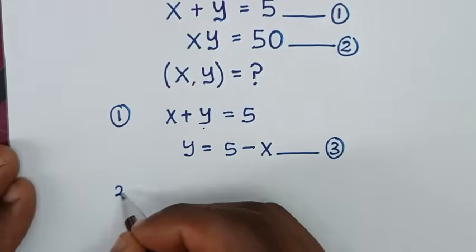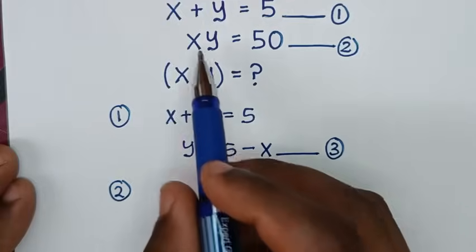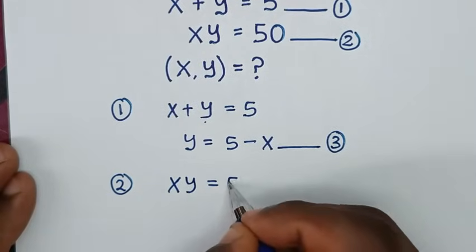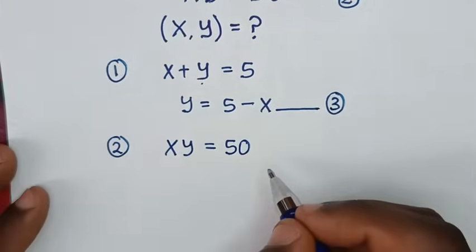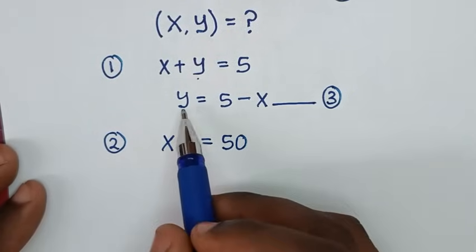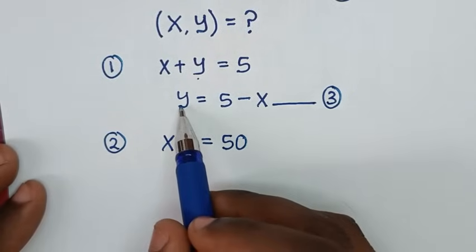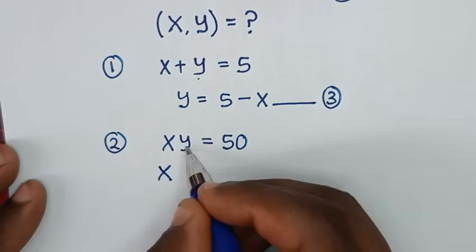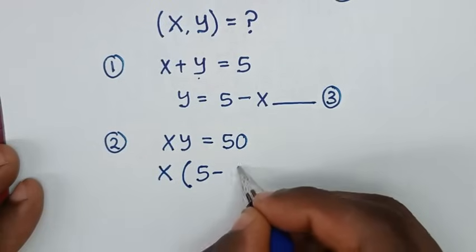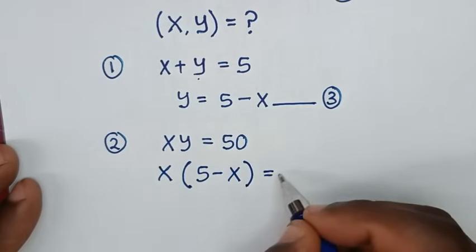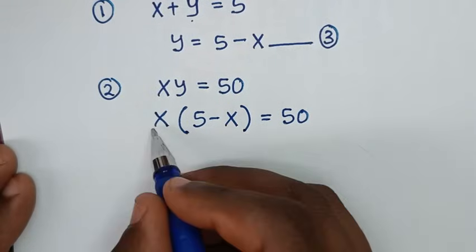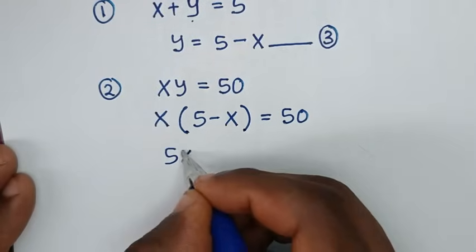In the next step, from equation 2 — which is x times y equals 50 — we'll substitute equation 3 into equation 2. Since equation 3 gives y as 5 minus x, it becomes x times (5 minus x) equals 50. Expanding this: x times 5 is 5x, and x times negative x is negative x squared, so we get 5x minus x squared equals 50.